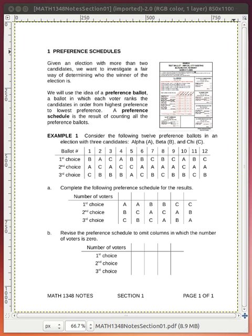In subsequent videos we'll look at how to decide the winner in this kind of preference balloting situation, but in this video we're going to look at a preference schedule. That is how we count up the votes that have been cast.